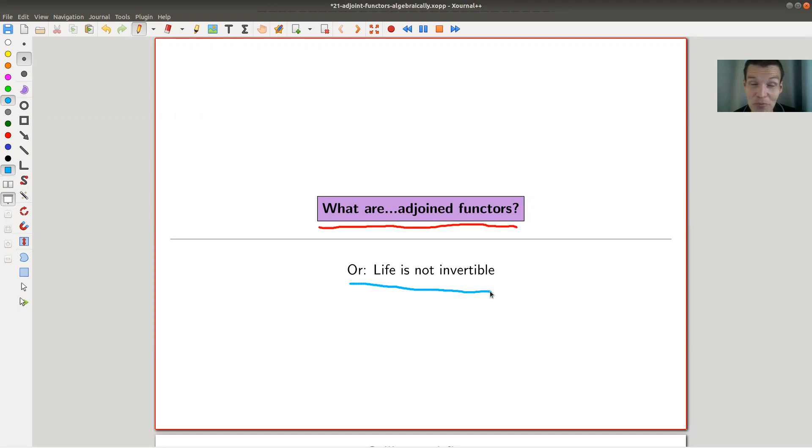It would be really cool if you could undo your mistakes in life, right? If life would be invertible. That would be really amazing. I certainly think life is not invertible. I would like to redo so many mistakes that I've done in the past, but I can't. That's just life.